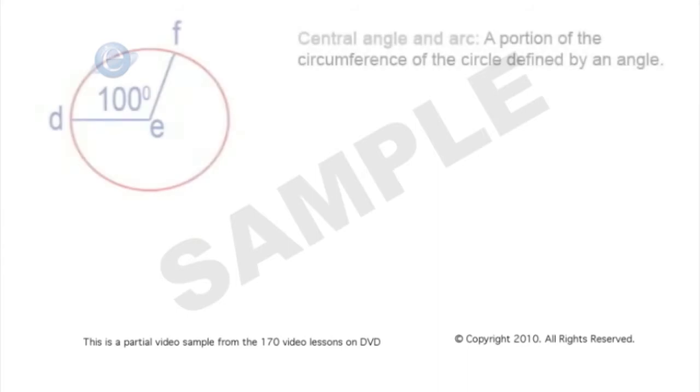Circle arcs and angles. We have angles from our circles defined by our radius or center position, and we have arcs of a circle which are portions of the entire circumference. Let's take a look at central angle and arc.